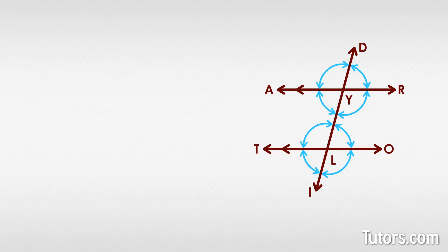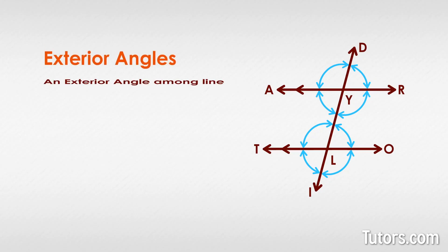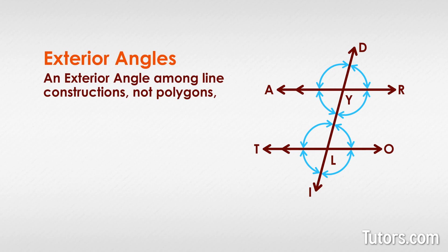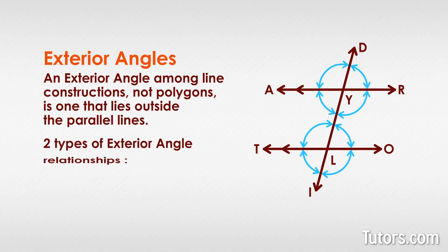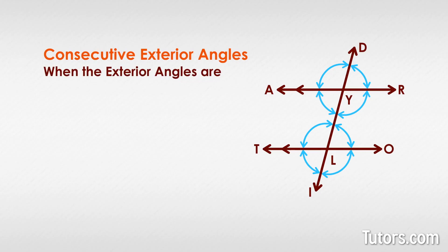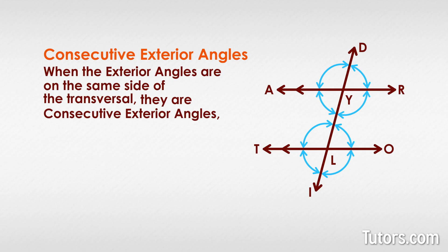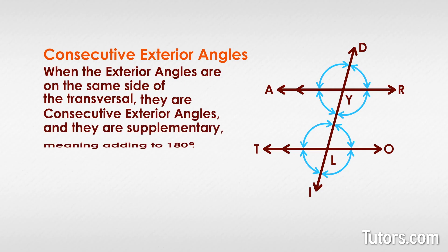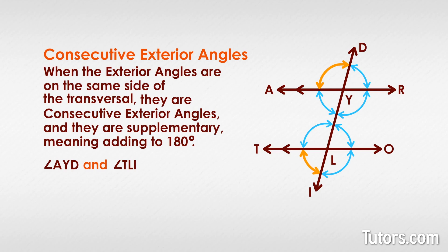These same parallel lines and their transversal create exterior angles. An exterior angle among line constructions — not polygons — is one that lies outside the parallel lines. You can see two types of exterior angle relationships: consecutive exterior angles and alternate exterior angles. When the exterior angles are on the same side of the transversal, they are consecutive exterior angles, and they are supplementary, meaning they add to 180 degrees. In our figure, angle A-Y-D and angle T-L-I are consecutive exterior angles. The only other pair of consecutive exterior angles is angle D-Y-R and angle O-L-I.